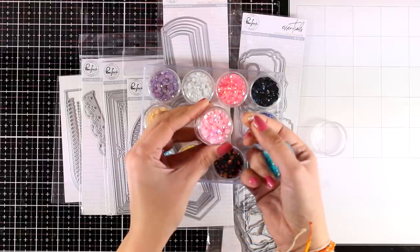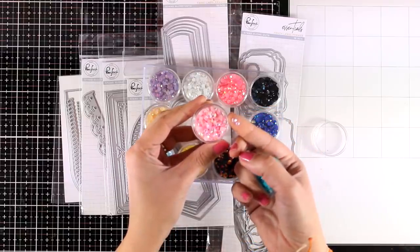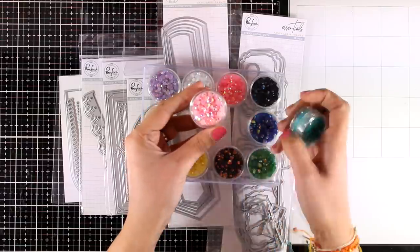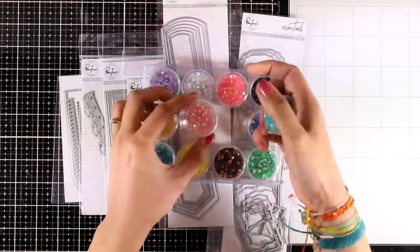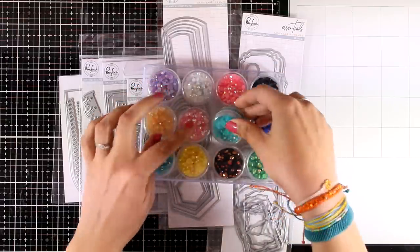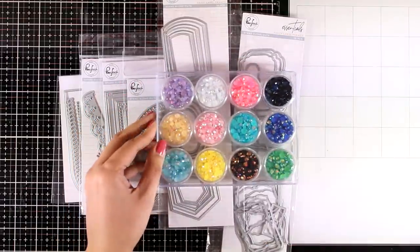There are four different packages like this one. If you go on their website to check out the colors, you can add these with glue on top of your projects to add some sparkle, or you can use them as your shaker mix inside shaker cards.